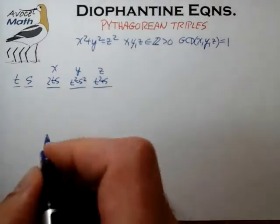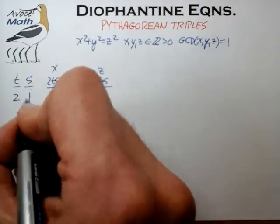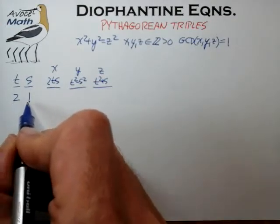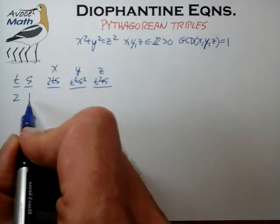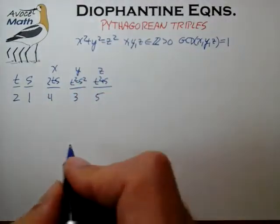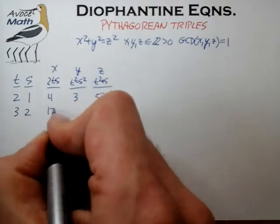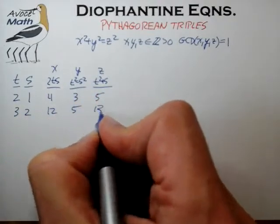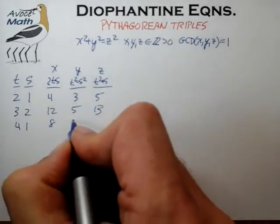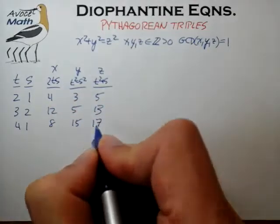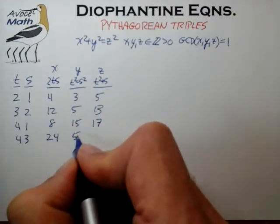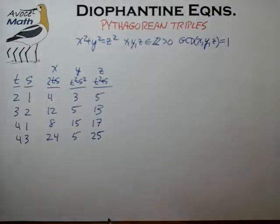Let's review a few cases. The pair 2, 1 is relatively prime and of opposite parity, and that generates the 3, 4, 5 right triangle. The set 3, 2 generates the 12, 5, 13 right triangle. The pair 4, 1 generates the 8, 15, 17 right triangle. And 4, 3 generates the 24, 7, 25 right triangle.